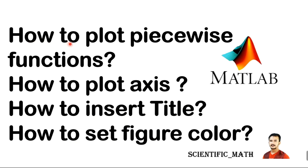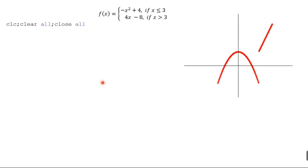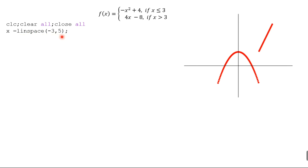We write a MATLAB code to plot piecewise functions. The function is: f(x) = −x² + 4 if x ≤ 3, and f(x) = 4x − 8 if x > 3. First, we create an input vector using the linspace command that produces 100 points between −3 and 5. This interval can be adjusted based on the limits we care about.